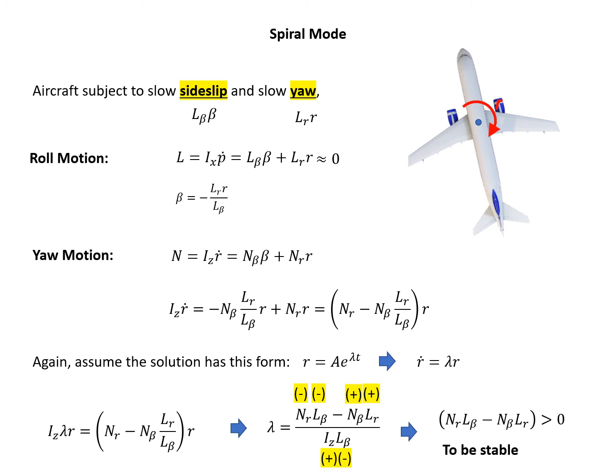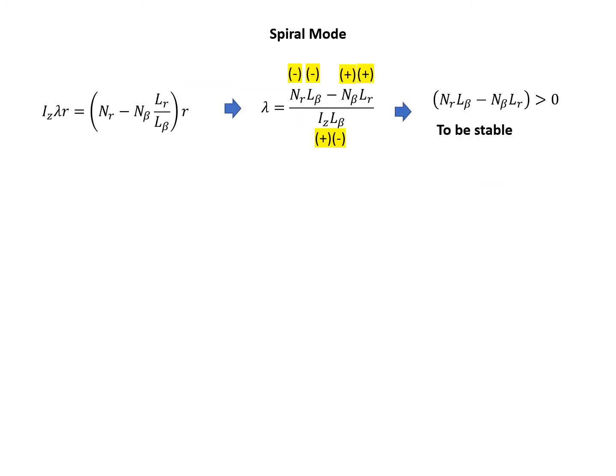In order to make sure this spiral mode is stable, lambda needs to be negative, which means N beta Lr should be larger than Nr times L beta. That's the requirement we need. In order to achieve a stable spiral mode, we should have Nr divided by N beta larger than Lr divided by L beta, both looking at the absolute value.